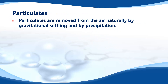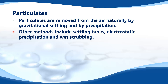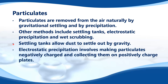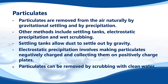Particulates are removed from the air naturally by gravitational settling and by precipitation in rain or snow. Other methods include settling tanks, electrostatic precipitation, and wet scrubbing. Settling tanks allow dust to settle out by gravity. Electrostatic precipitation involves making particulates negatively charged and collecting them on positively charged plates. Particulates can also be removed by scrubbing with clean water, which is wet scrubbing.